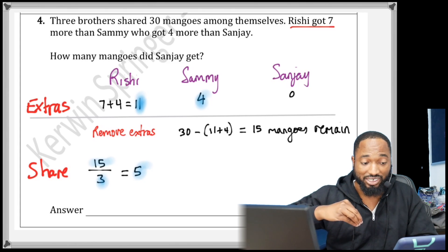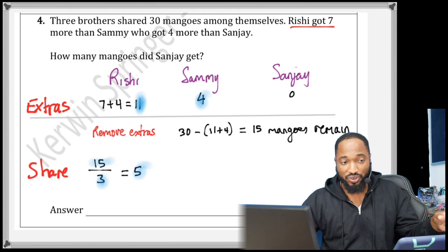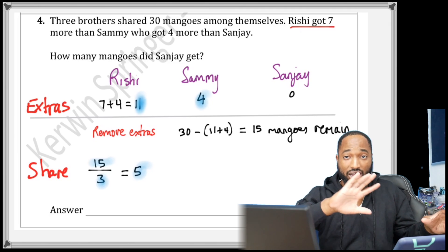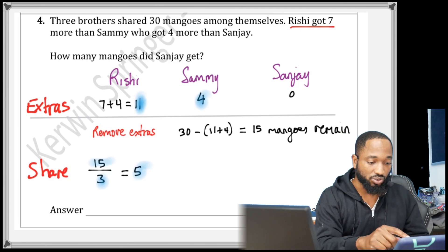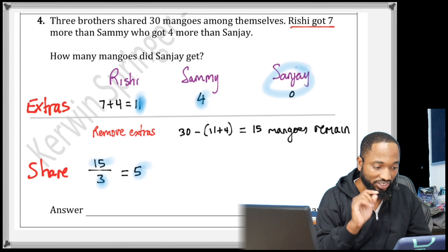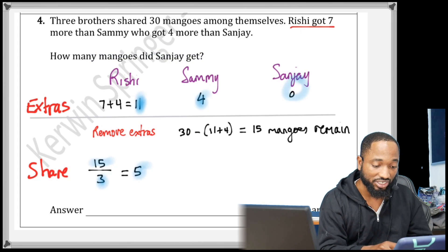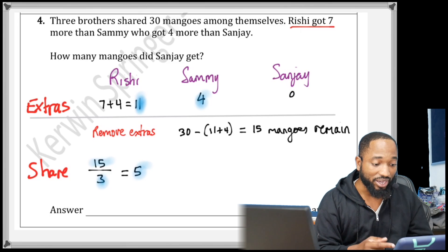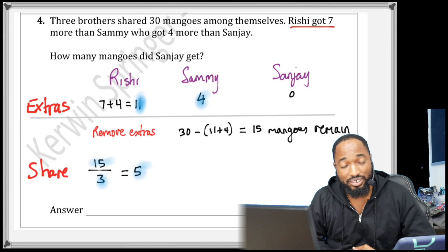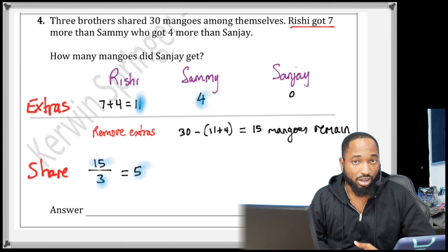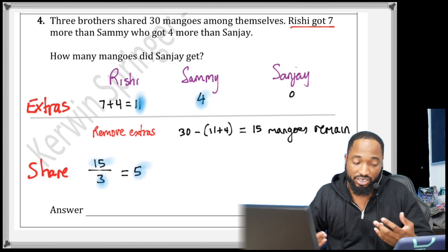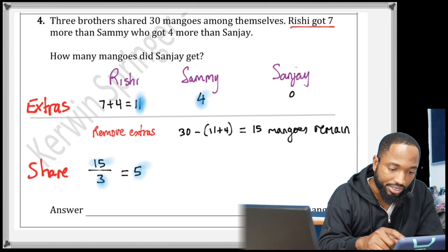What am I doing now? I'm sharing to get how much each of them started off with if it was shared equally, extras not included. So Sanjay gets 5. How many mangoes did Sanjay get? That's the question. Sanjay is just getting 5 by the way. How many mangoes did Sammy get? Can you say so in the comments? How many mangoes will Rishi get? Do you know the answer to that?